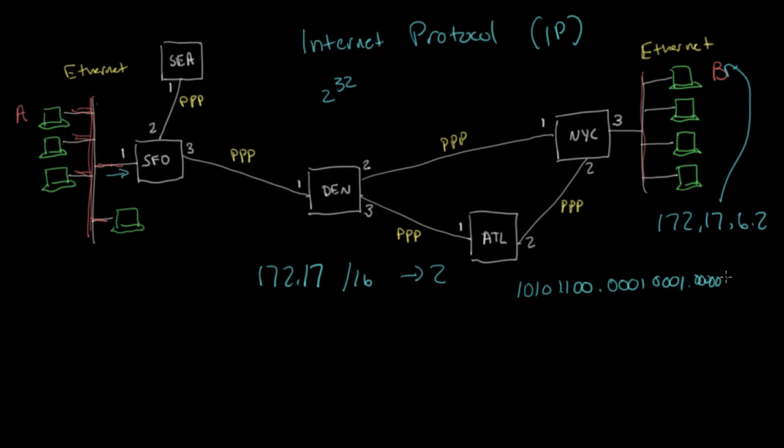And so 6 is 0, 1, 1, 0, and 2 is 0, 0, 0, 0, 0, 0, 1, 0. So this is 172.17.6.2 here in binary.